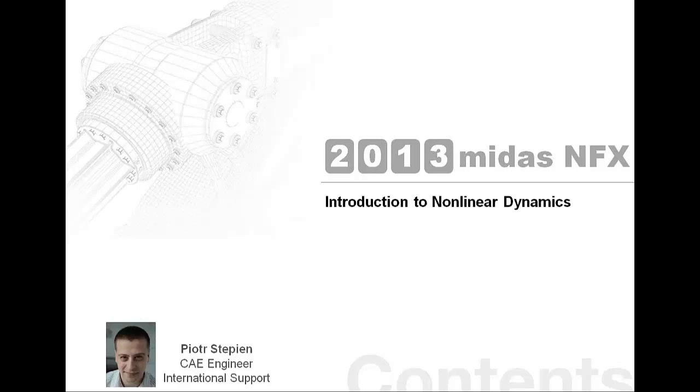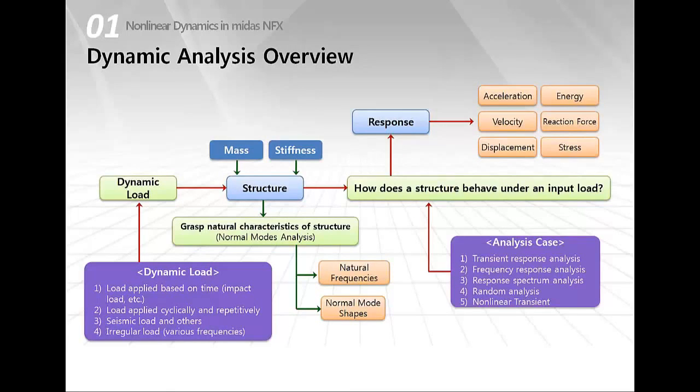Okay so let's start the introduction. So I think you remember this graph from the previous webinar. This time once again I would like to present to you the overview of dynamic analysis. So this graph answers the question what we need to perform dynamic analysis and what kind of output responses can we obtain. So to perform any kind of dynamic analysis we have to specify dynamic load. Then also mass and stiffness are required and these two parameters should be always present in your structure or system and after this we have to choose the proper analysis type to perform the calculations and to get response as displacements, accelerations or velocities.